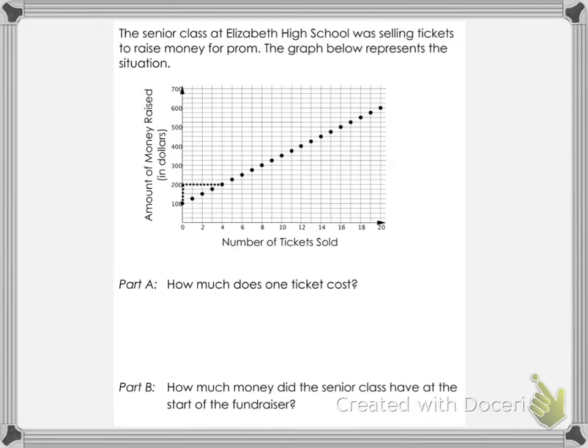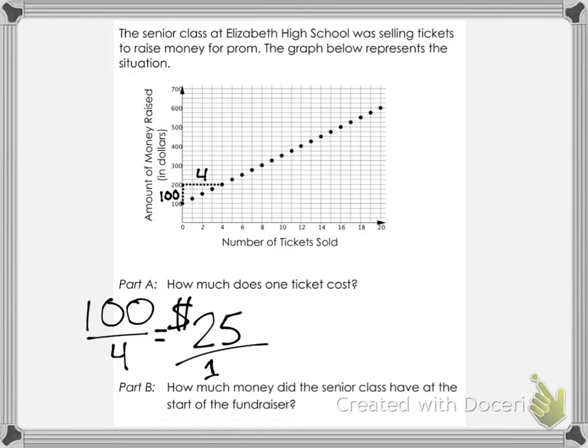The very last question: the senior class at Elizabeth High School was selling tickets to raise money for prom. The graph represents the situation. How much does one ticket cost? Finding the slope with rise 100 and run 4 gives 100 over 4, meaning $25 per ticket. Part B: how much money did the senior class have at the start of the fundraiser? The y-intercept is at 100 — that was the starting point — so they had $100.